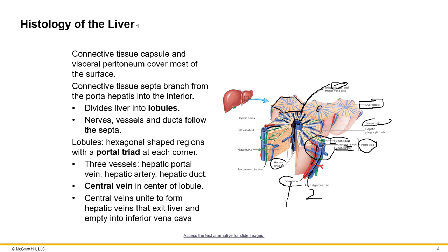To summarize: liver tissue is arranged in a hexagonal formation called the liver lobule. Each liver lobule has a central vein in the middle. The hepatic portal triad includes the hepatic artery and the hepatic portal vein, which are two ways blood enters the liver, and the hepatic duct through which bile flows. As blood passes through the hepatic sinusoids, cells called hepatocytes process the blood, which then exits through the central vein, hepatic vein, and into the vena cava.